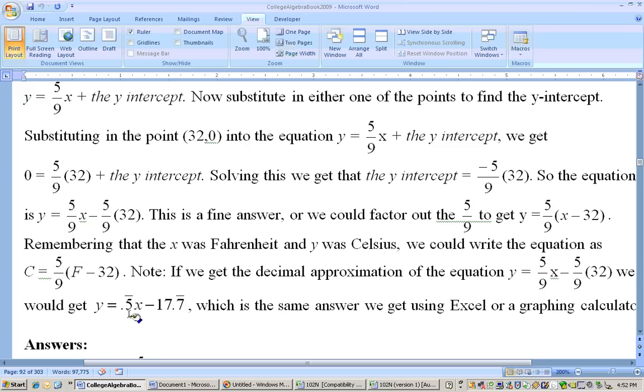times the f, which gives you 0.5 f, or 0.5 repeating x, and the 0.5 ninths times the minus 32 is actually 17.7 bar. So, that would be the same answer to the problem.